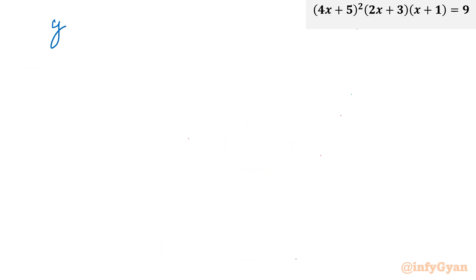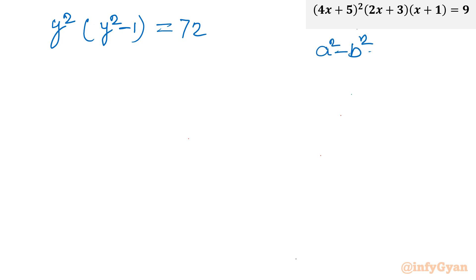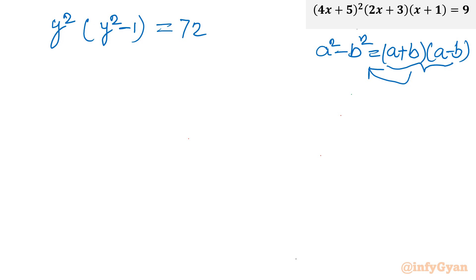So I write y²(y²−1) = 72. Using the result that (a+b)(a−b) = a²−b², we applied the vice versa: (y+1)(y−1) = y²−1. Expanding this gives y⁴ − y² − 72 = 0.